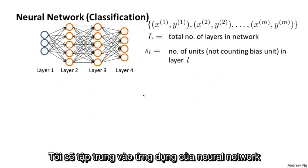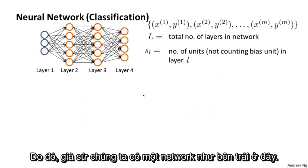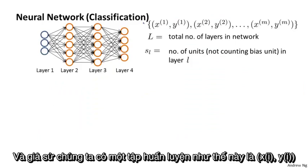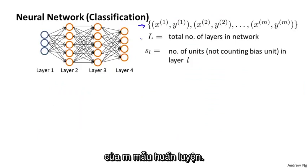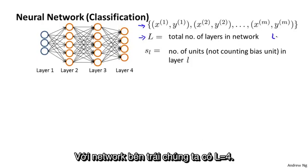I'm going to focus on the application of neural networks to classification problems. So suppose we have a network like that shown on the left, and suppose we have a training set like this of (x_i, y_i) pairs of m training examples. I'm going to use uppercase L to denote the total number of layers in this network. So for the network shown on the left, we would have capital L equals four.